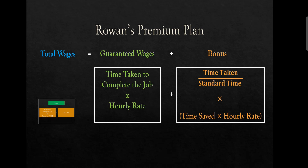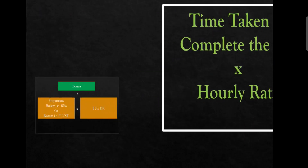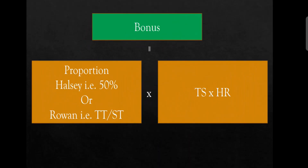Where we see in Halsey's plan, there is a 50% bonus on time saved. But in Rowan's plan, there is a different proportion — it is not a flat 50%. The proportion changes. So when we say 50% of time saved into hourly rate we need to pay in the form of bonus under Halsey — in Rowan's plan the proportion of the calculation is different.